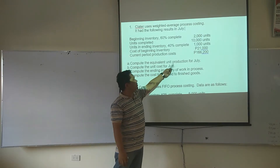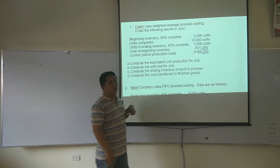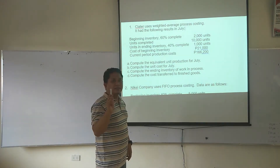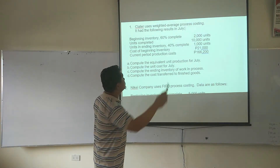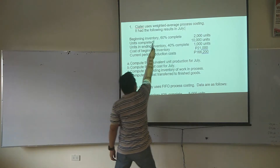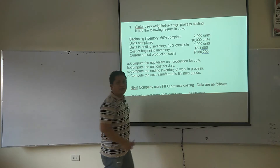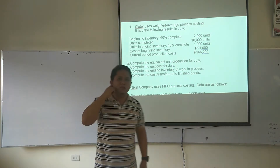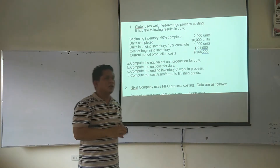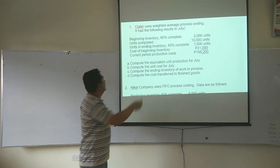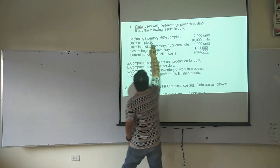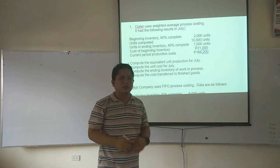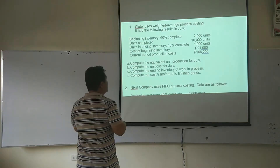The equivalent unit for July. Observe that the method used here is the weighted average. So when we are using weighted average with this regard, we are building inventory when we're building units of production.